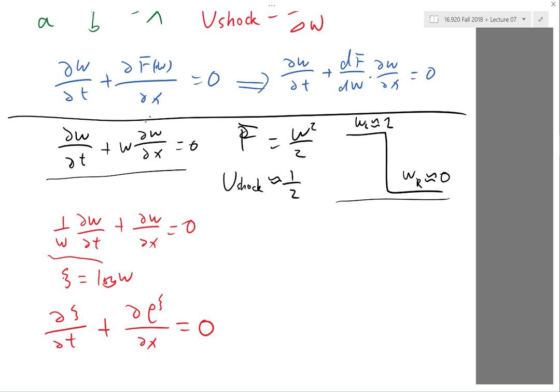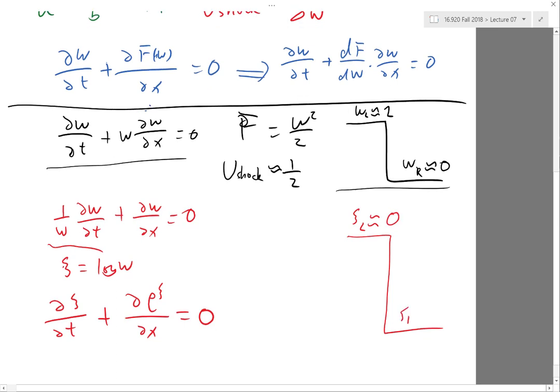Oh, now, let's actually look at exactly the same phenomenon in the xi space, where my xi left is approximately equal to what? Zero, right? I'm taking log of w, okay? My xi right is, well, approximately minus infinity. Basically, it's very, very large, very, very negative, right? Now, can somebody help me calculate what is the speed of the shock in this case?